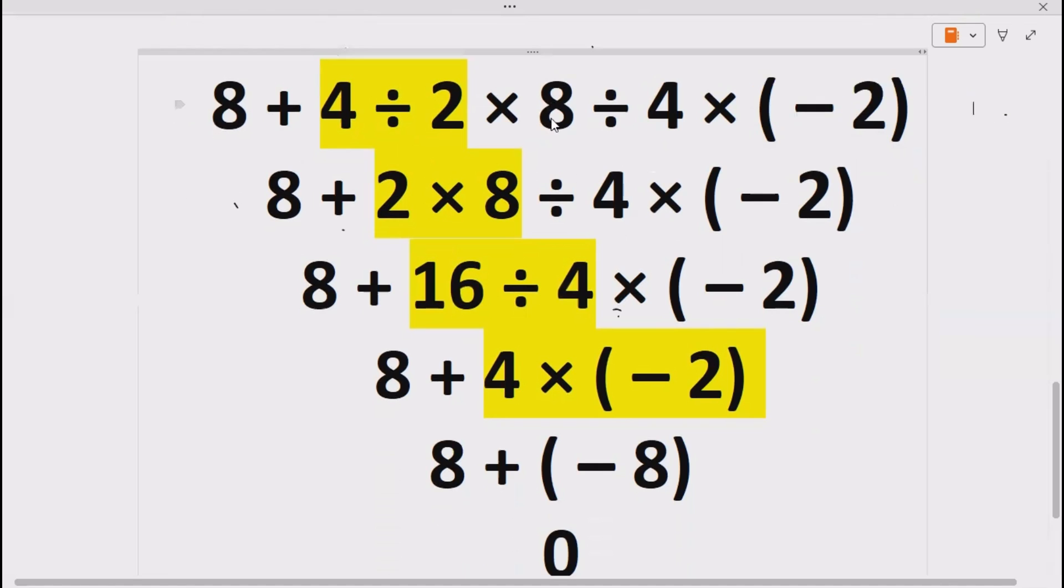Now let's see how we can solve the expression. First, we have to do division according to BODMAS or PEMDAS. The four divided by two gives us two. The expression remains like this. Now next we have to do multiplication because, according to BODMAS and level of preference going from left to right, we have multiplication first. The two times eight gives us 16.